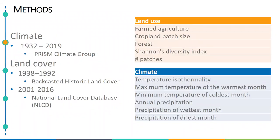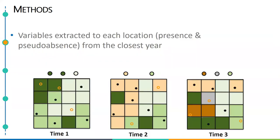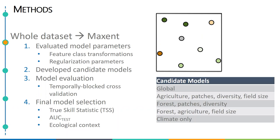We used climate data from the PRISM group and calculated five metrics representing changes in agricultural intensity, available habitat, and landscape diversity and fragmentation — derived either from backcasted land cover data or National Land Cover Database data. We then paired these points with environmental data from the closest year and extracted time-specific values to each skunk location or pseudo-absence point, and then modeled species-environmental niche using MAXENT. We evaluated model parameters using the global model and developed four other candidate models to test our hypotheses about agricultural intensity, habitat, landscape diversity, and fragmentation.